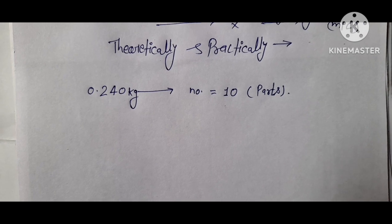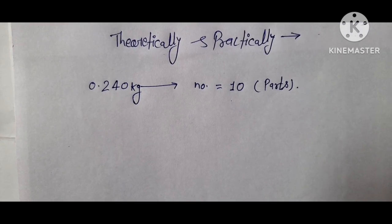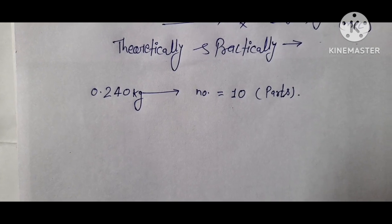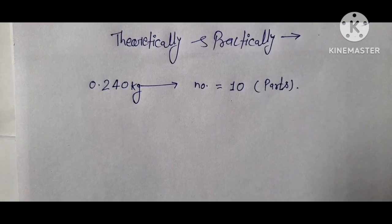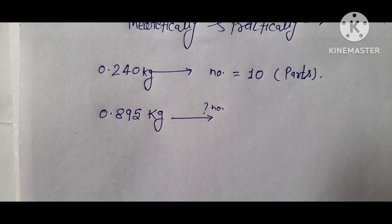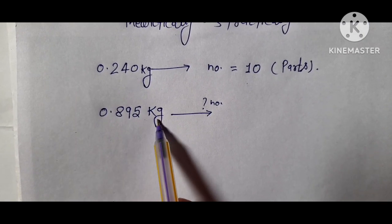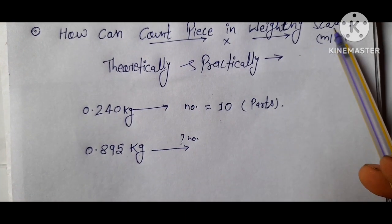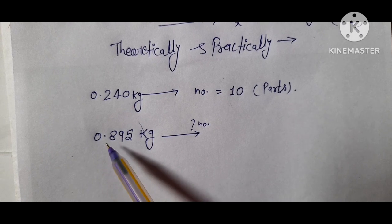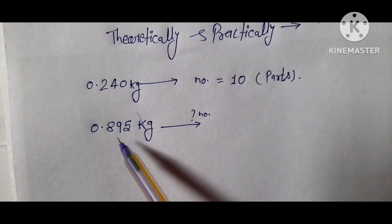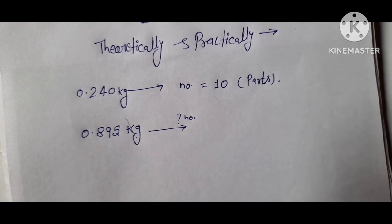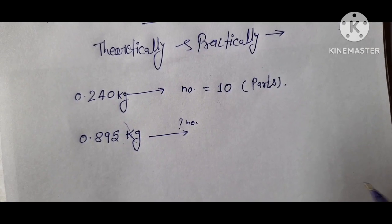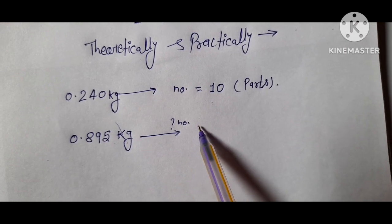Now if I am putting all the parts on the weighing machine, its value is measured as 0.895 kg. If I am putting all parts on the weighing machine, then their mass will be calculated as 0.895 kg on the weighing machine. So what will be the number of parts here?